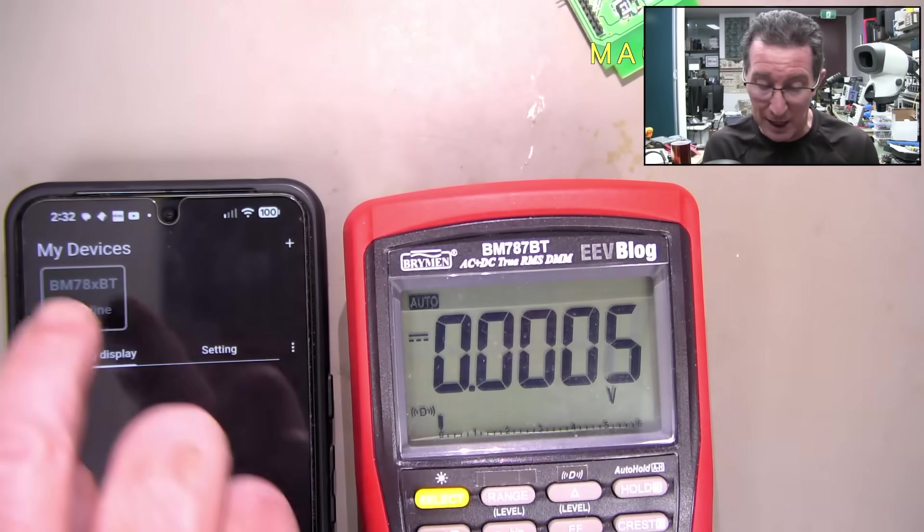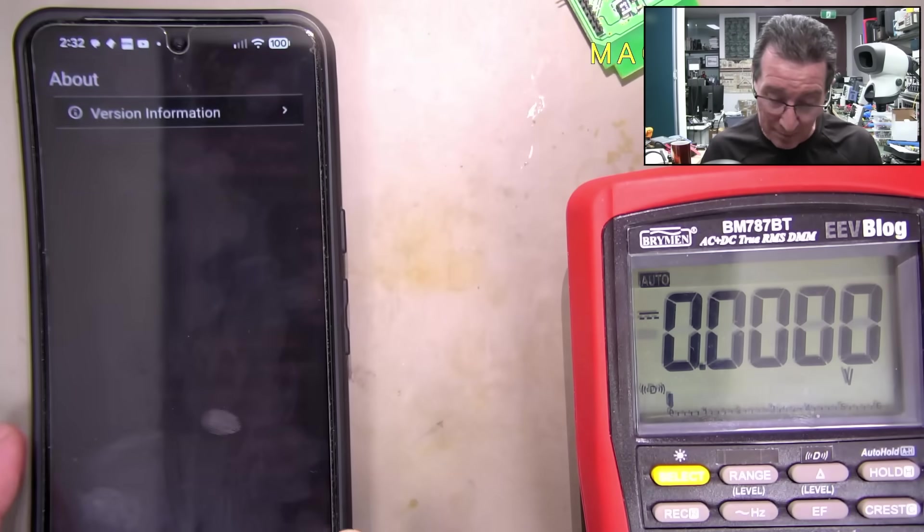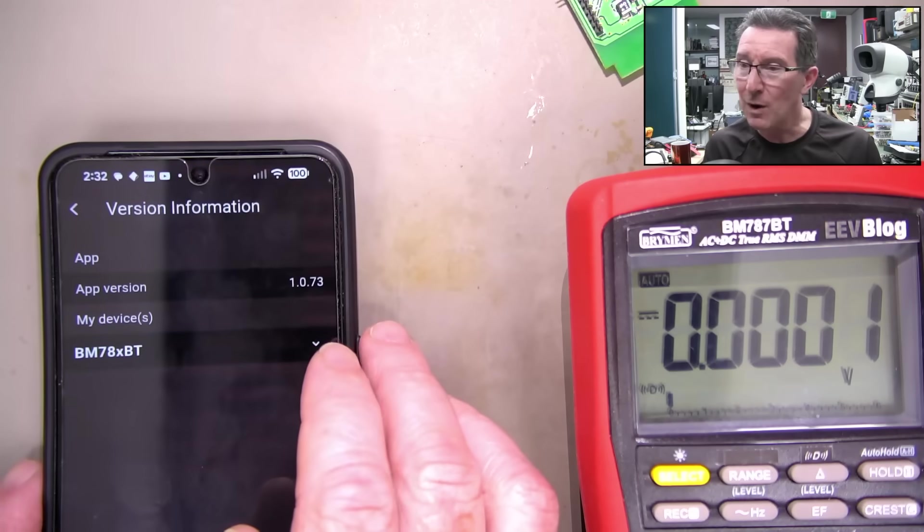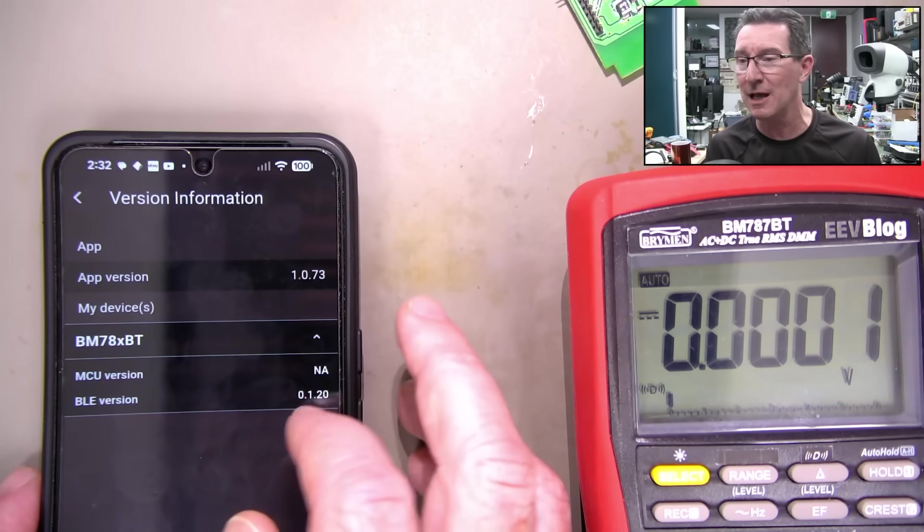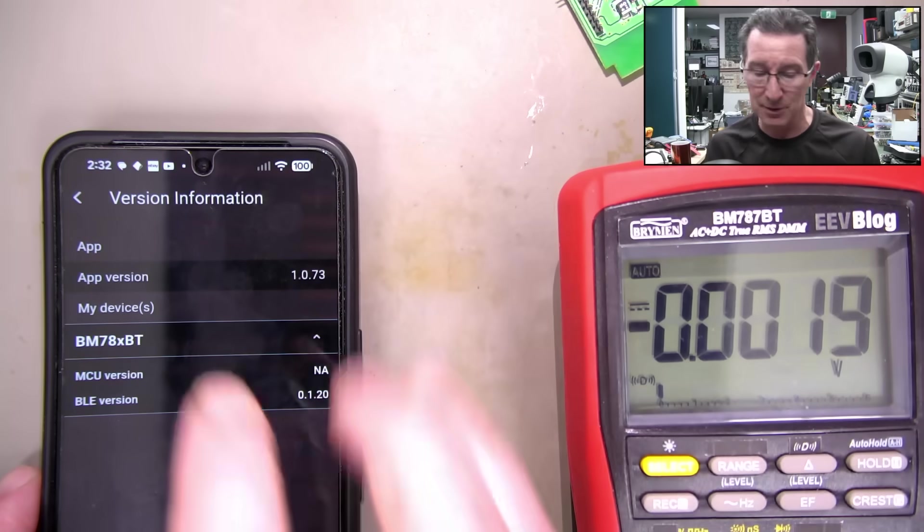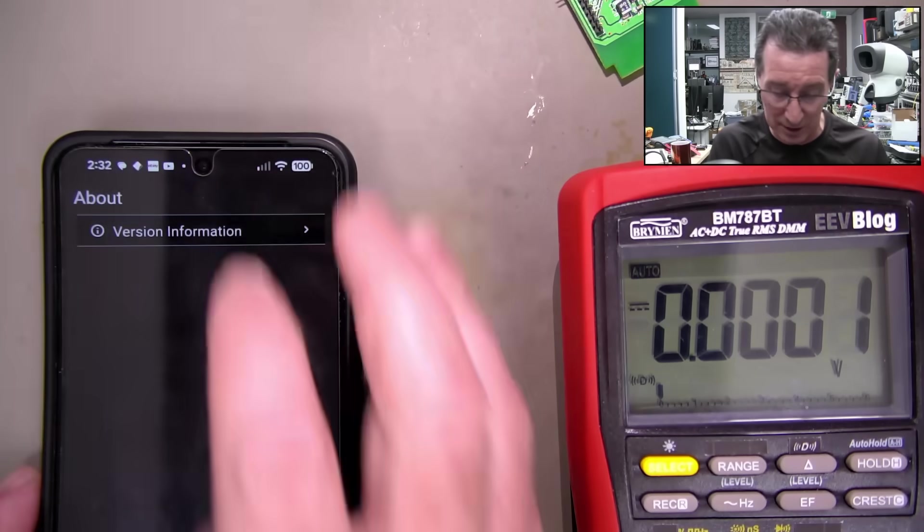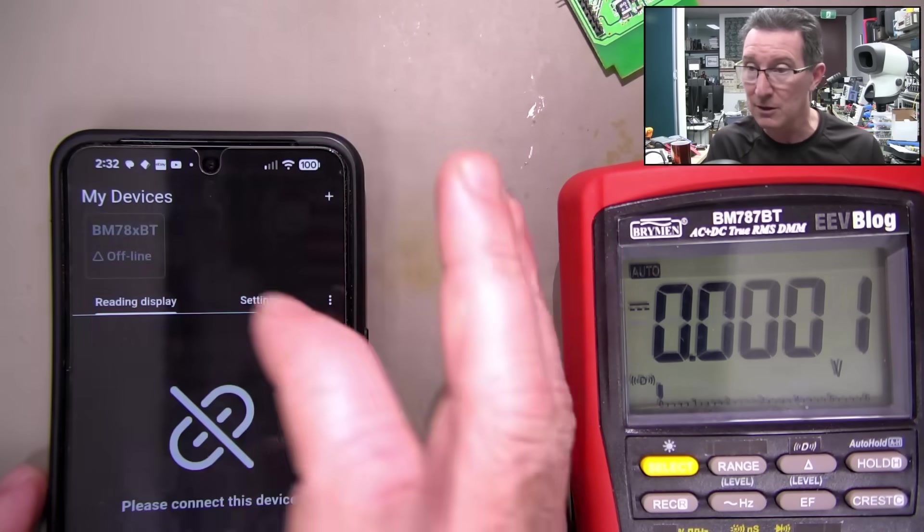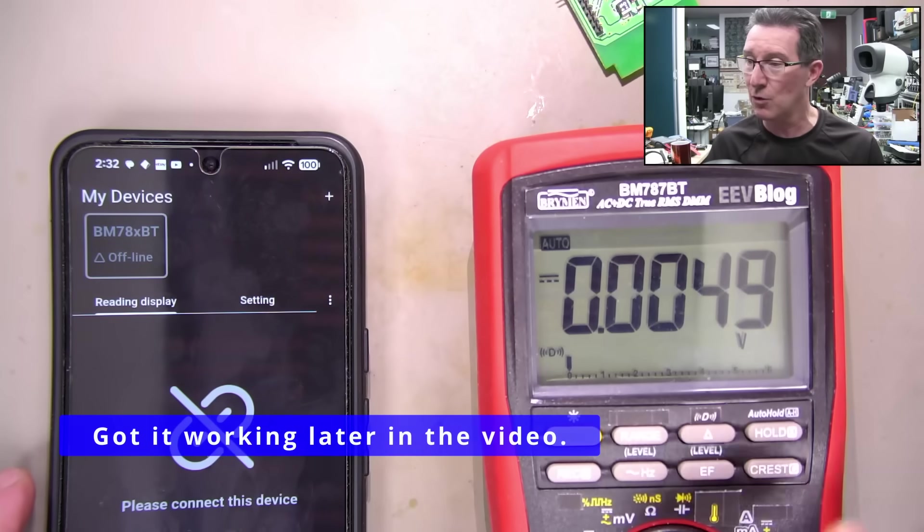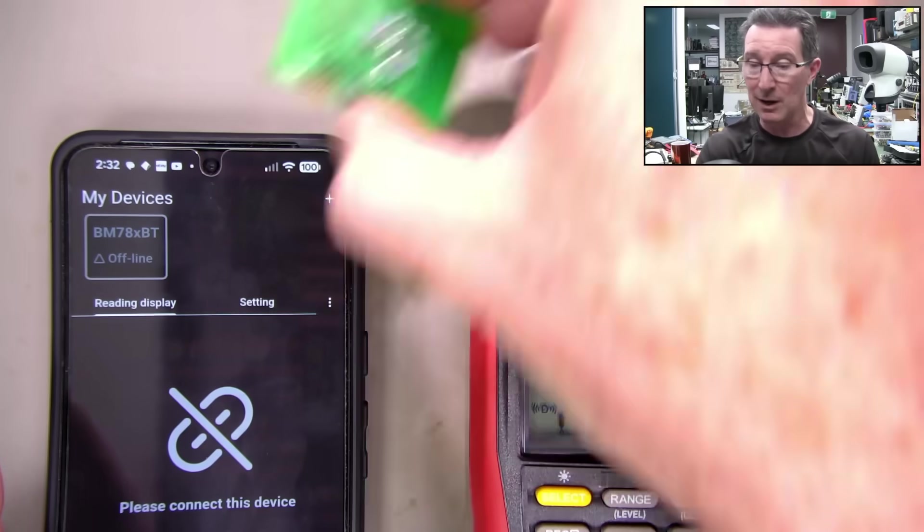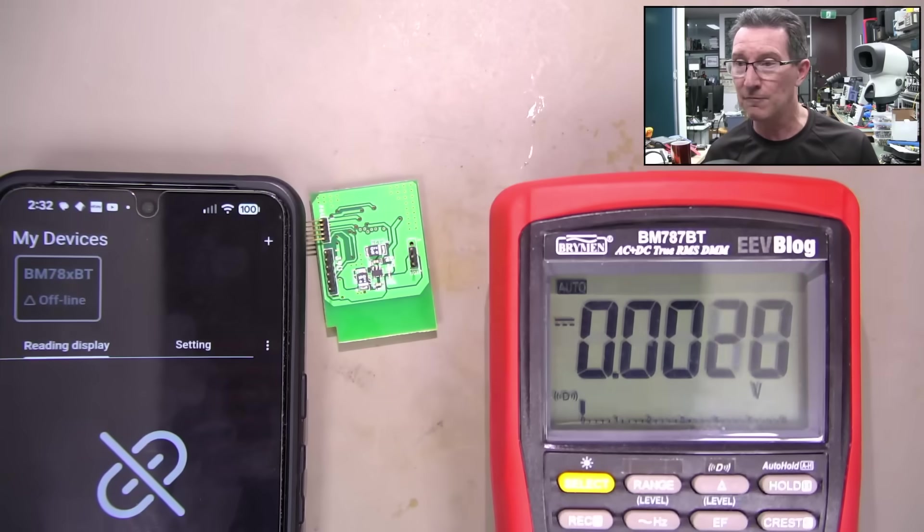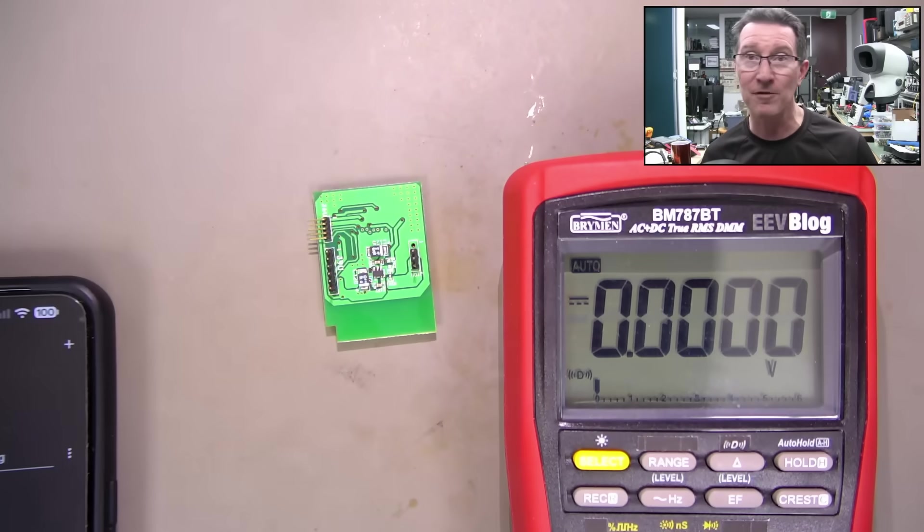And it does not work at the moment. This is the latest version of the app. This is version 1.073 there. And it shows the last time it physically connected. But it doesn't work. It doesn't do anything. It does not connect. It will not connect regardless of what combinations I do. So I'm going to install this new firmware for the Bluetooth. And hopefully it works.